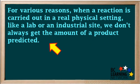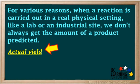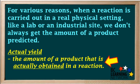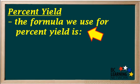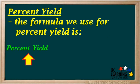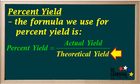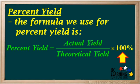For various reasons, when a reaction is carried out in a real physical setting, like a lab or industrial site, we don't always get the amount of product that's predicted. The amount we do get is called the actual yield, which is defined as the amount of a product that is actually obtained in a chemical reaction. The formula we use to calculate percent yield is: percent yield equals the actual yield over the theoretical yield times 100%. So percent yield is a ratio of the amount we do get to the amount we expect to get, expressed as a percentage.